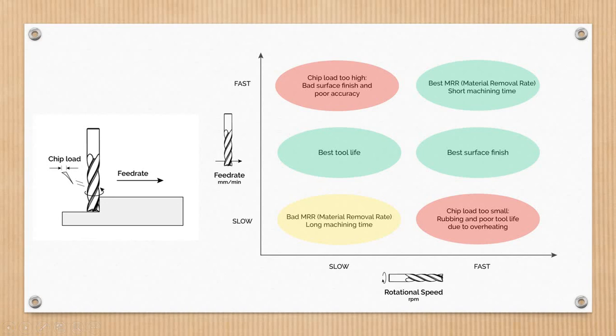you get the best tool life and the best surface finish. Proper speed and feed also ensure the best metal removal rate. There is a relationship between all these factors: tool life, surface finish, and metal removal rate. We need to balance these values to achieve optimal results.